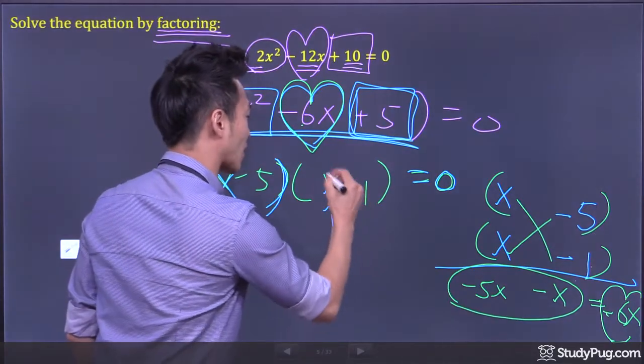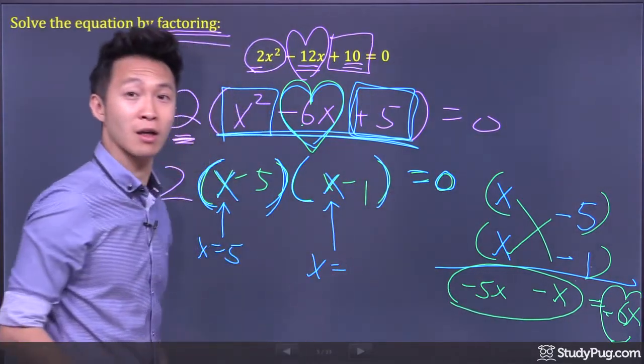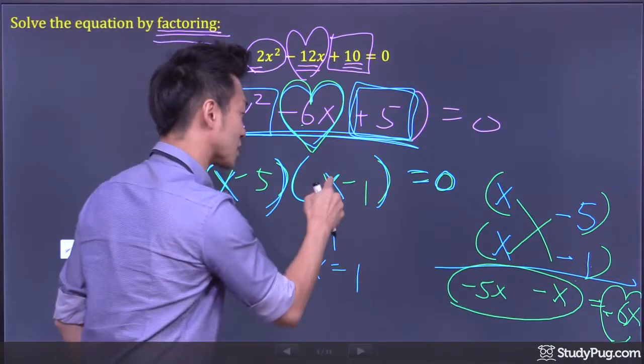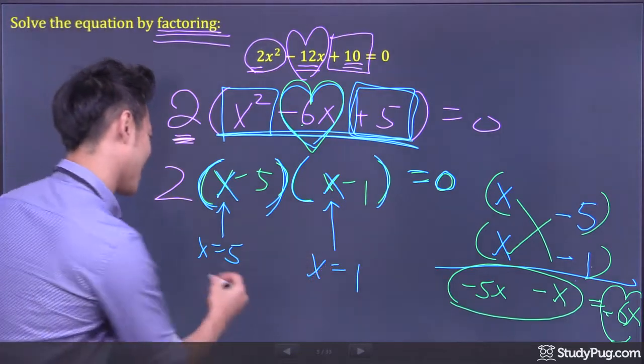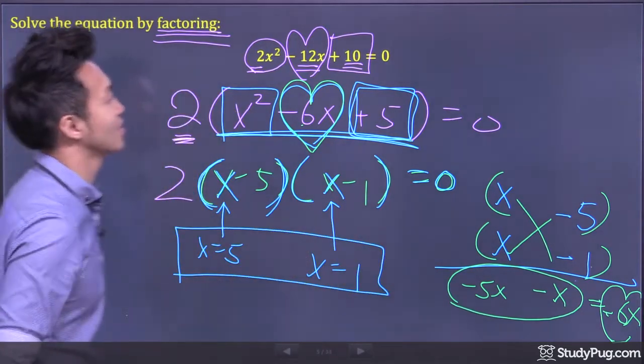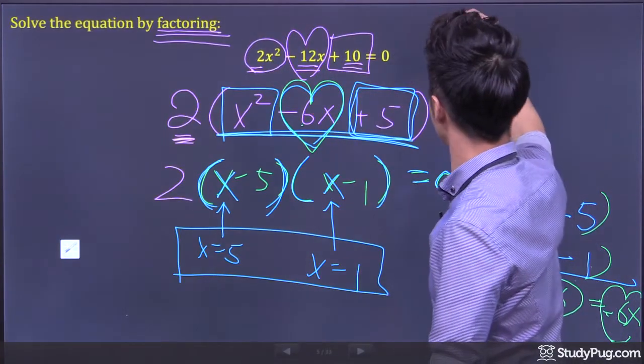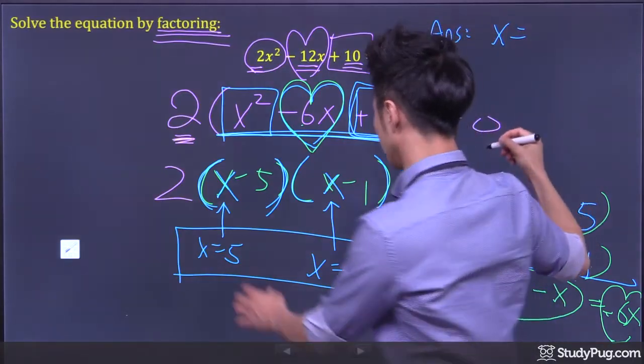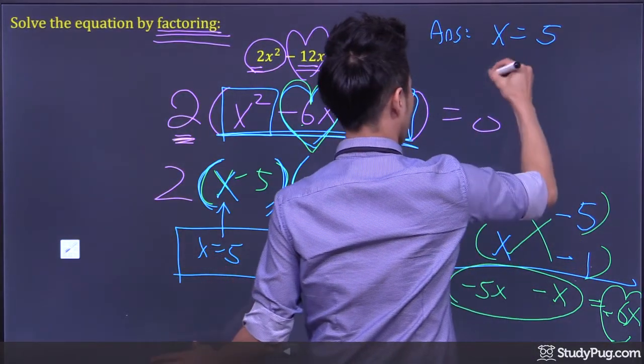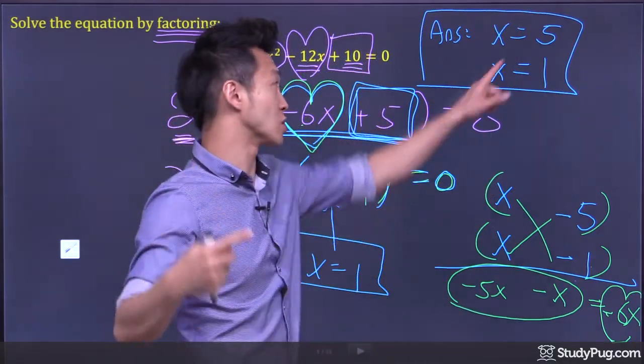Now, what x value will make this whole thing equal to 0? x must be 1, because 1 - 1 is 0. And that's the answer. So the solution for this quadratic equation is x equals 5 and x equals 1. We have two solutions for x.